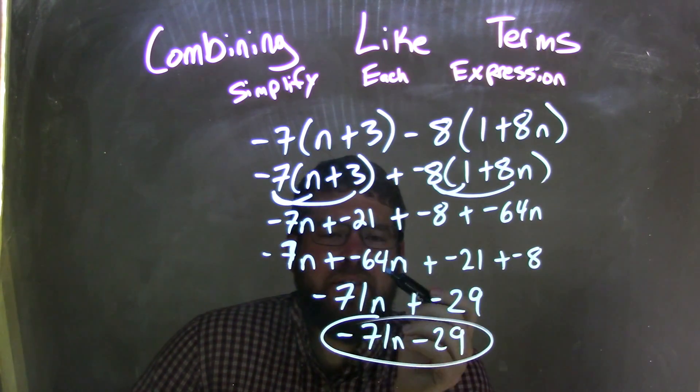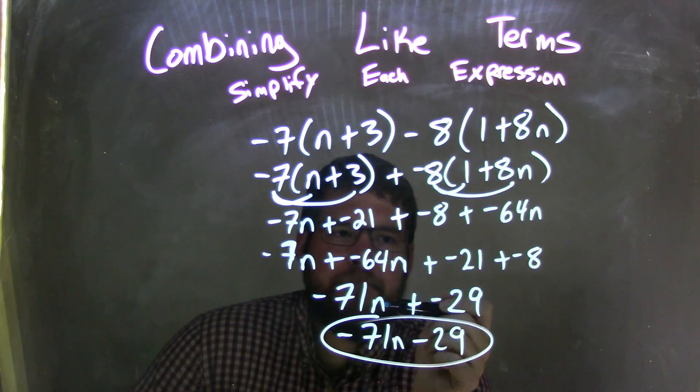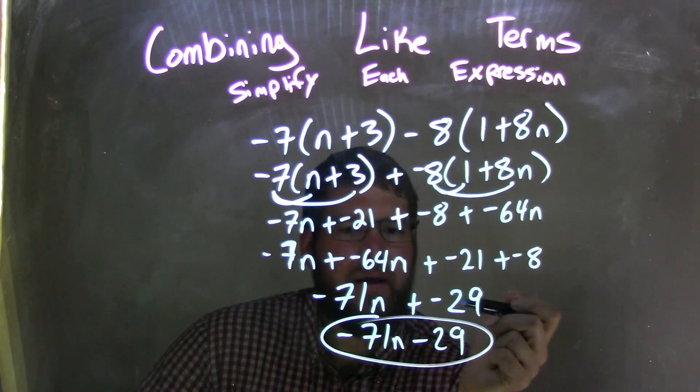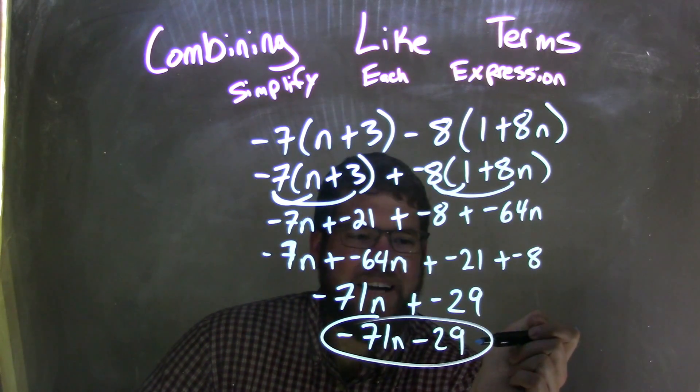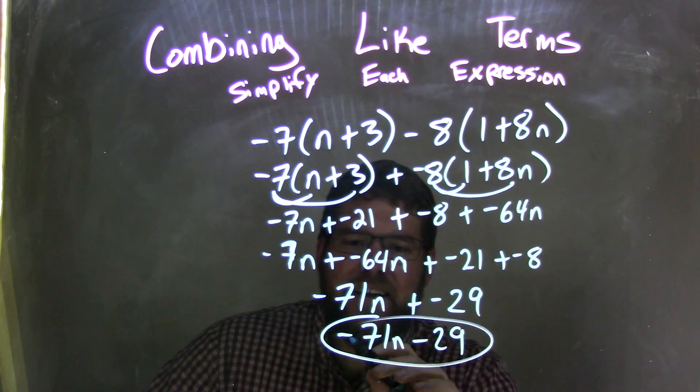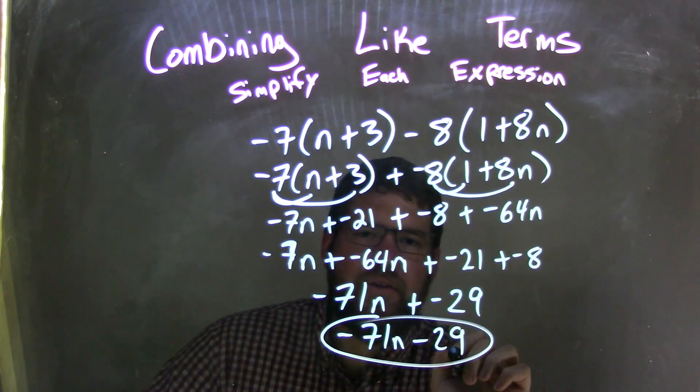Negative 7n plus negative 64n is negative 71n, and negative 21 plus negative 8 is negative 29. Adding a negative is the same as subtraction, which looks cleaner. So our final answer is negative 71n minus 29.